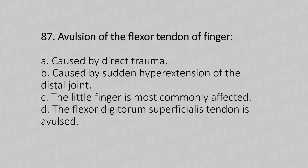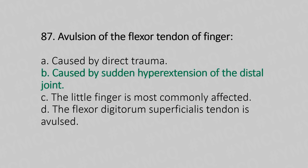Let's move to question number 87. Avulsion of the flexor tendon of the fingers: Option A, caused by direct trauma. Option B, caused by sudden hyperextension of the distal joint. Option C, the little finger is most commonly affected. Option D, the flexor digitorum profundus tendon is avulsed. The answer is Option D, caused by sudden hyperextension of the distal joint.